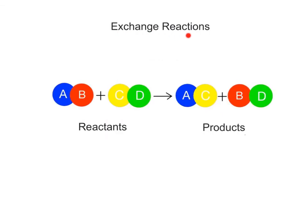In exchange reactions, the chemical components of the reactants recombine to form new products. Exchange reactions are a combination of both decomposition and synthesis reactions. A general equation for a basic exchange reaction is: reactant AB plus reactant CD yields products AC and BD. In an exchange reaction, the bonds between the reactants AB and CD break as in a decomposition reaction, and new bonds form as the new products AC and BD are created as in a synthesis reaction.